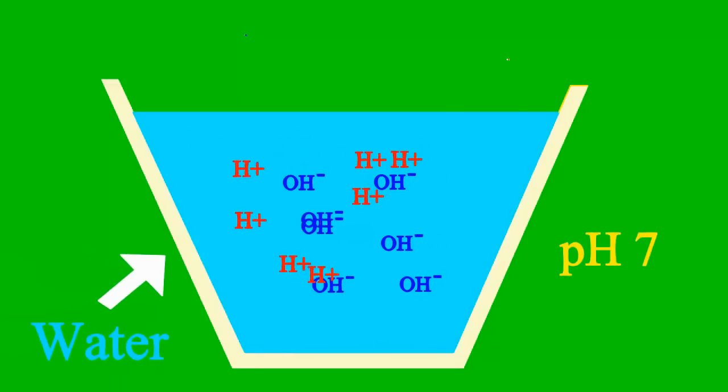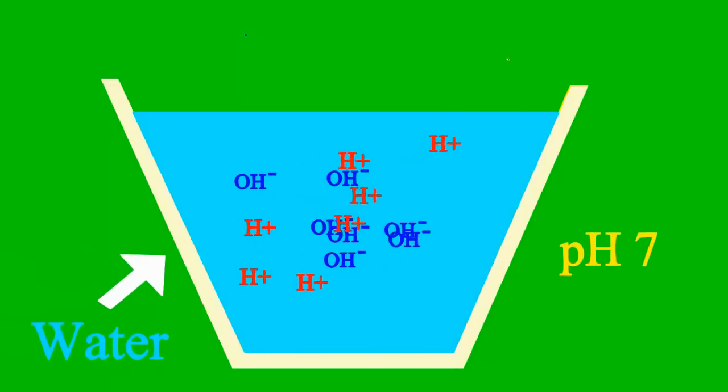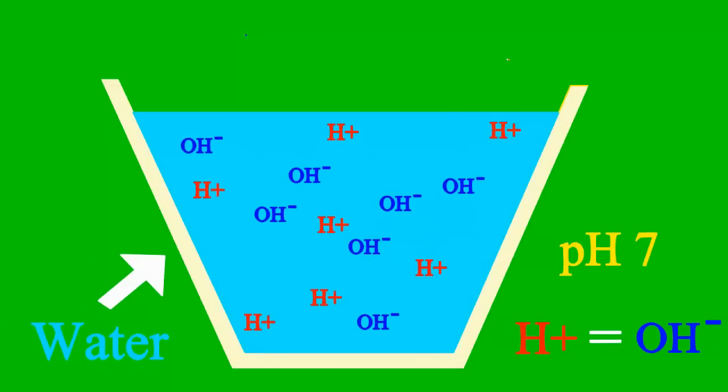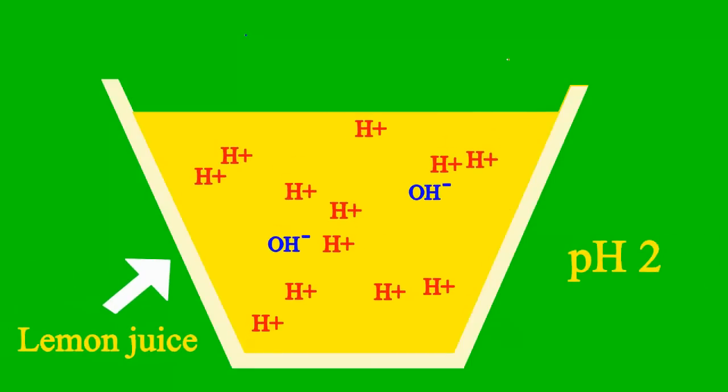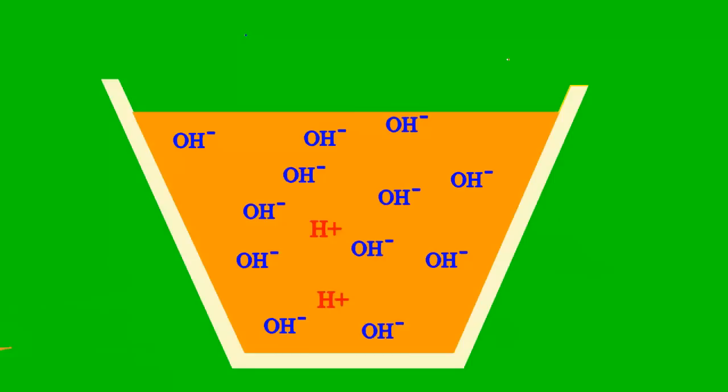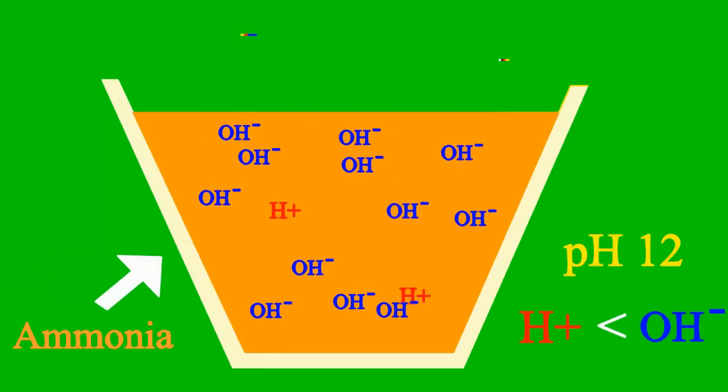When the pH is 7, then it's a case where the sample is neither an acid nor base. But less than 7, it's an acid, we say. More than 7, it's a base all the way.